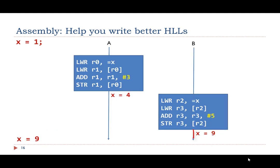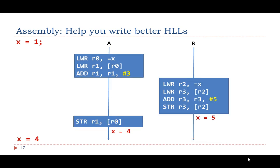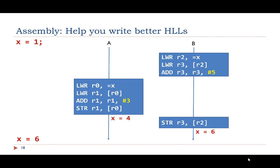If the execution timeline is sequential, the final result of x is 9, because the load-modify-store sequence is not interleaved between the two tasks. However, the timeline may look different: before task A's store executes, the processor pauses A and starts serving task B. After B completes, A resumes and stores the value 4 into memory — so x ends up as 4. Alternatively, the timeline may produce a final value of 6. Assembly code helps us understand why x can have different values at the end. To avoid such issues, one solution is to use a lock to synchronize entry to regions of code that access the shared resource, so that when one thread has entered this region, no other thread can enter.